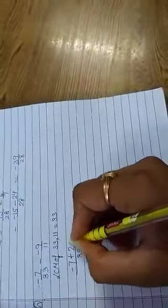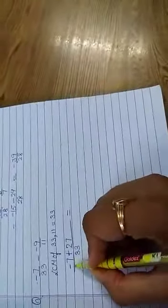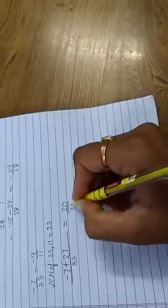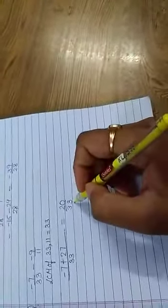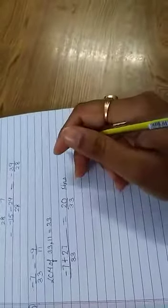33 divided by 11 will be 3 and 3 multiply 9, 27. Minus 7 plus 27 will be 20. So answer will be 20 upon 33.